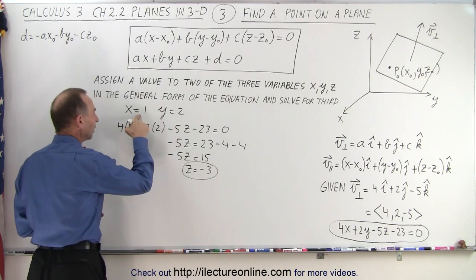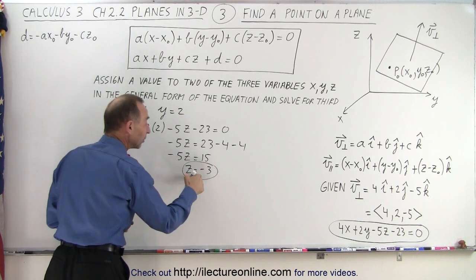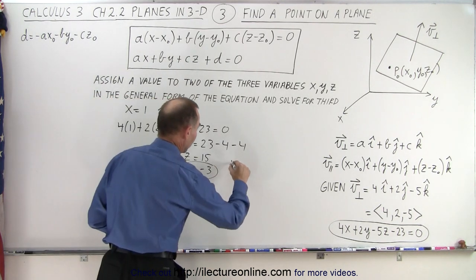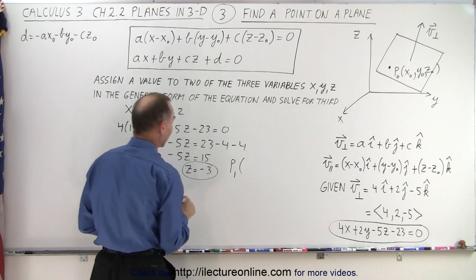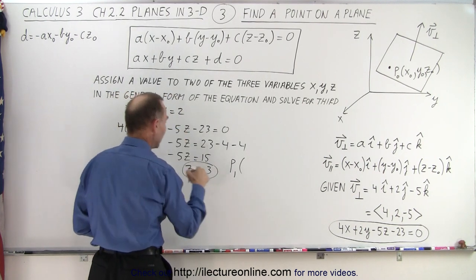So if x equals 1, y equals 2, then z equals negative 3. So one point that we found, let's call it point 1, has the components 1, 2, and negative 3.